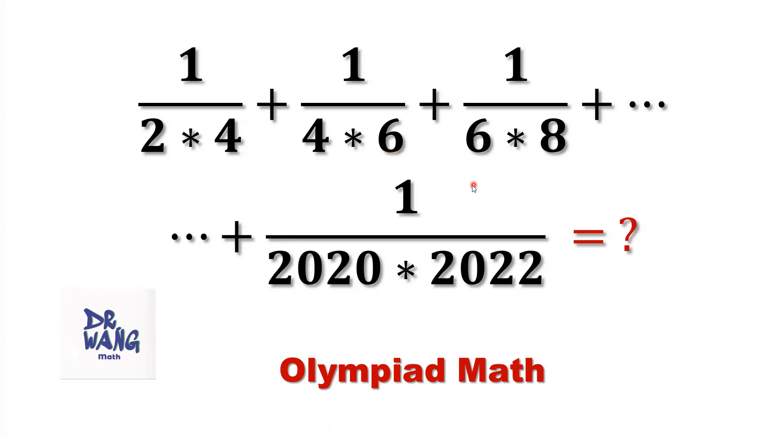Second, from the summation, we can see that from the denominators, there's a pattern. All numbers are consecutive even numbers.